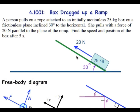A person pulls on a rope attached to an initially motionless 25 kg box on a frictionless plane inclined 30 degrees to the horizontal. She pulls with a force of 20 newtons parallel to the plane of the ramp. Find the speed and position of the box after 5 seconds.